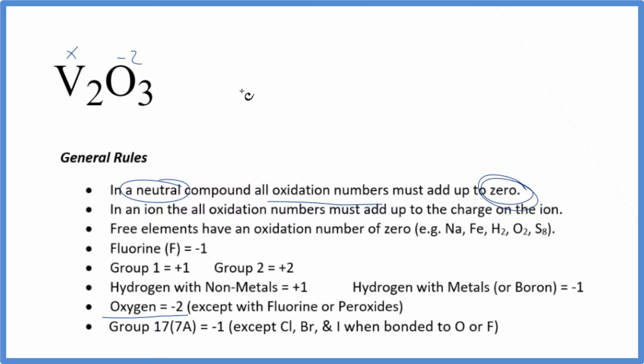The whole thing is going to equal zero. We just set an equation up: two times X, that's 2X, and then we have three times minus two, so minus six. Neutral compound, it's going to equal zero.